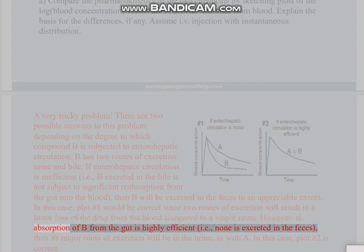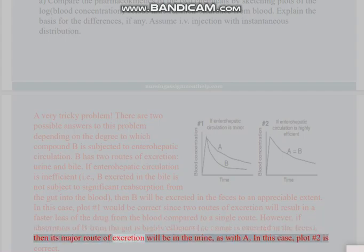However, if absorption of B from the gut is highly efficient (i.e., none is excreted in the feces), then its major route of excretion will be in the urine, as with A. In this case, plot number two is correct.